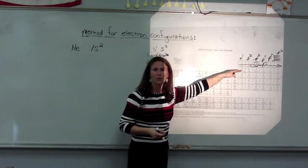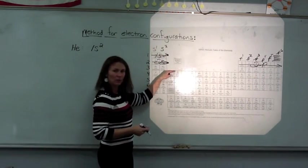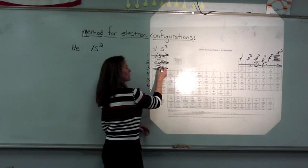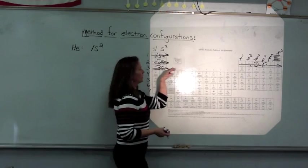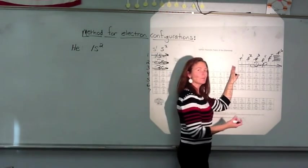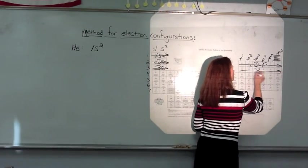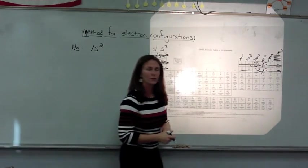And then we run out of elements on the second period. So we come back over and start filling the third period. This would be the 3s orbital, so they are filling the 3s orbital. No elements right here, we have a gap. And then we start filling the 3p.